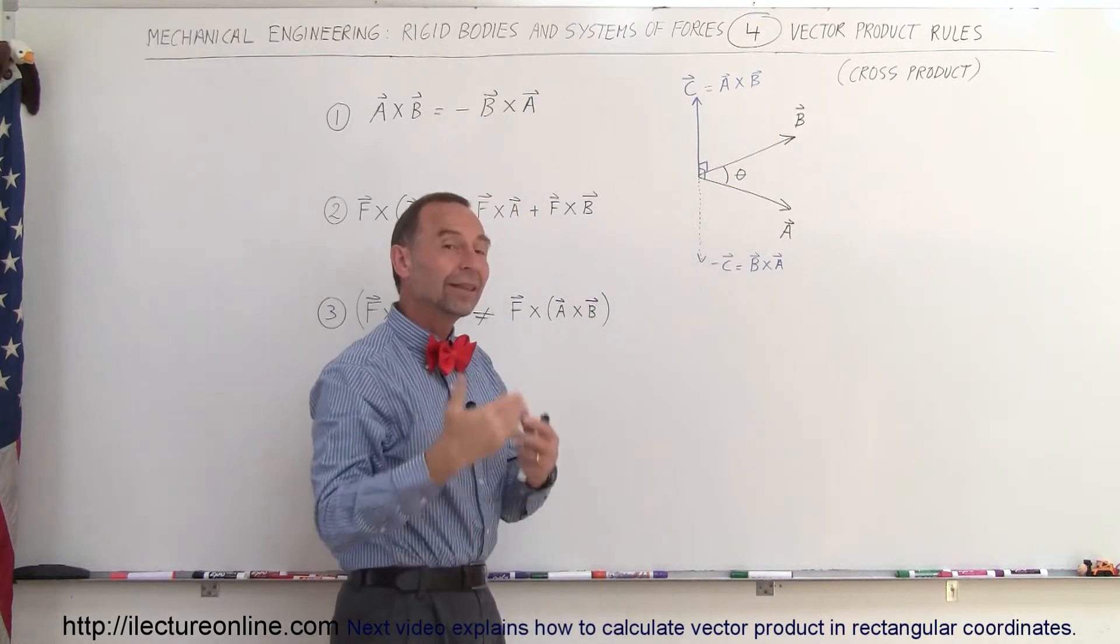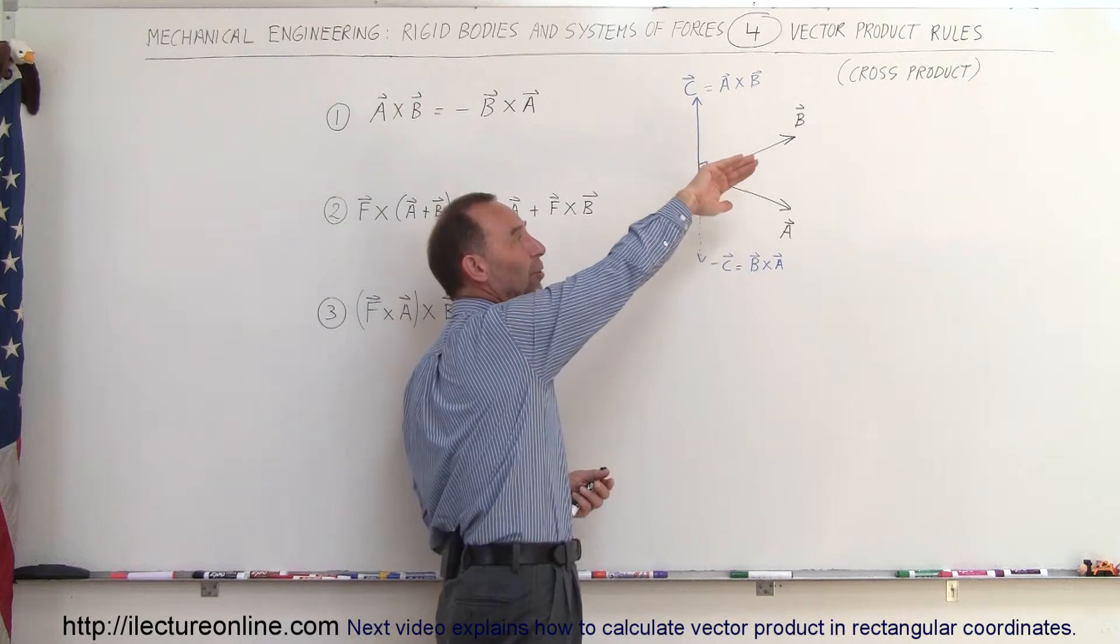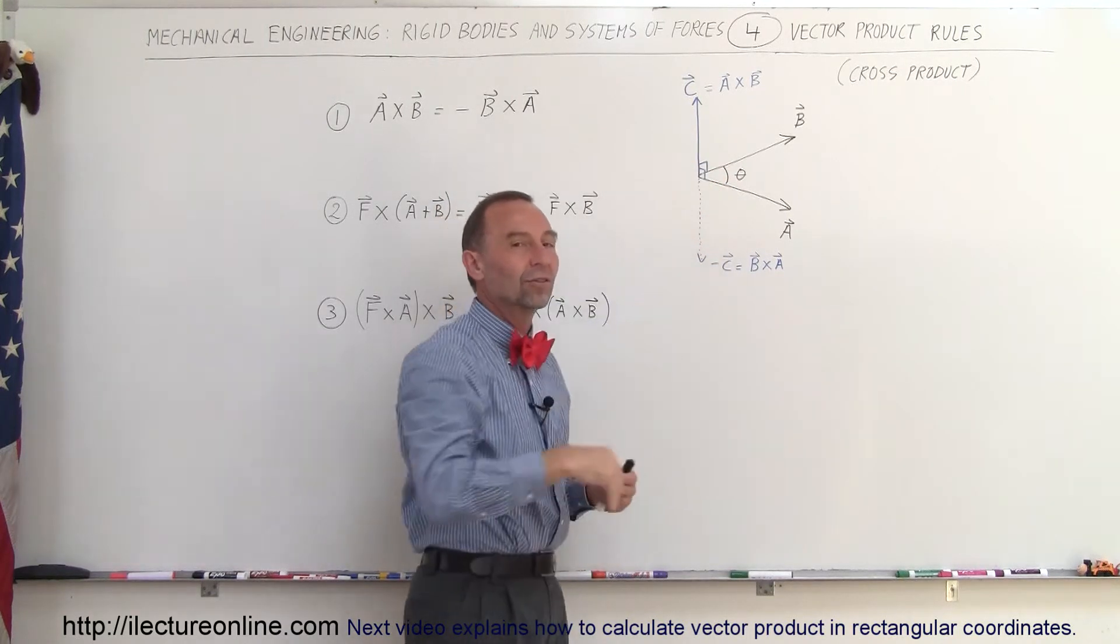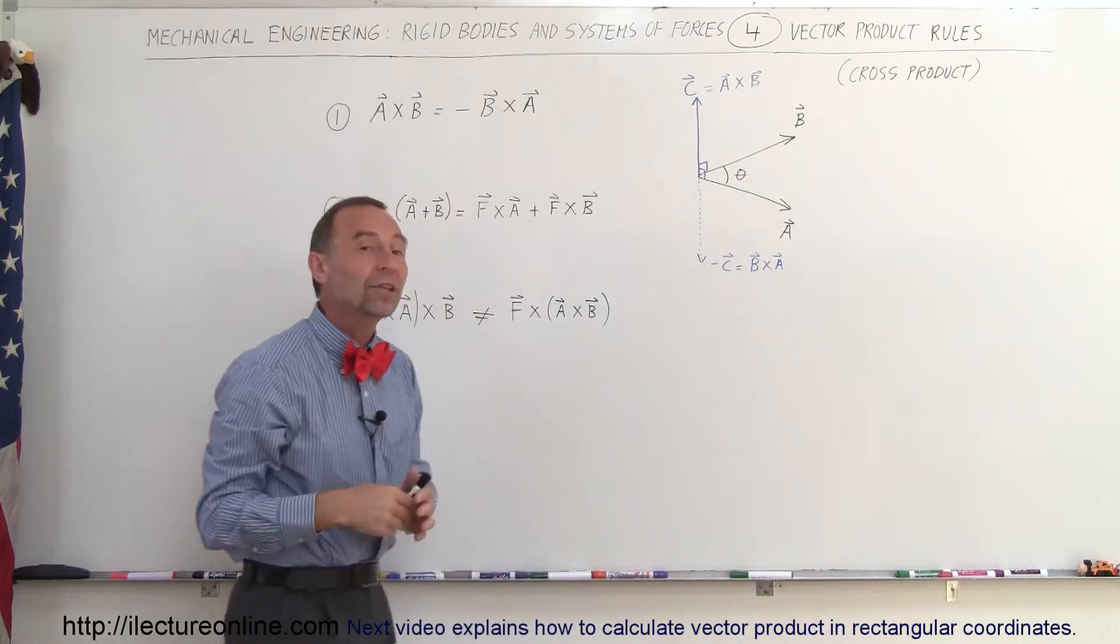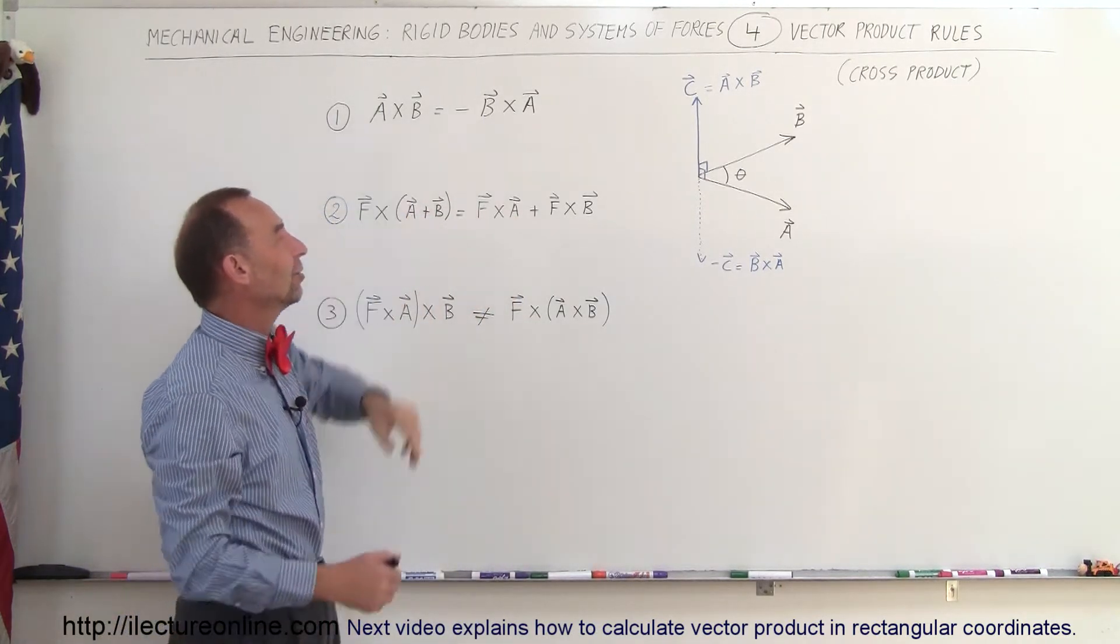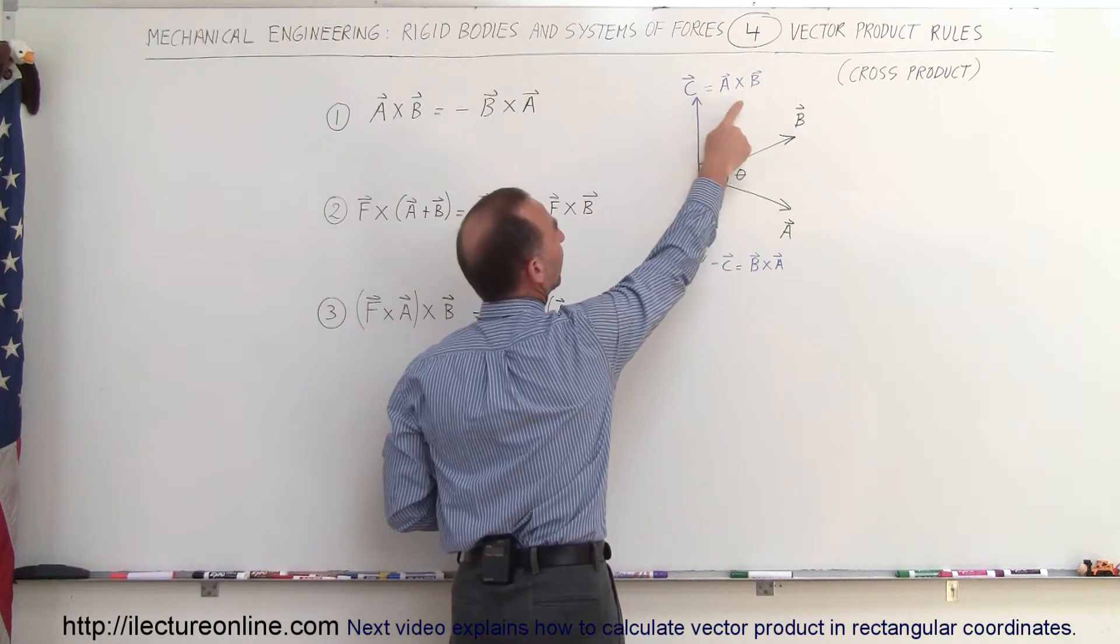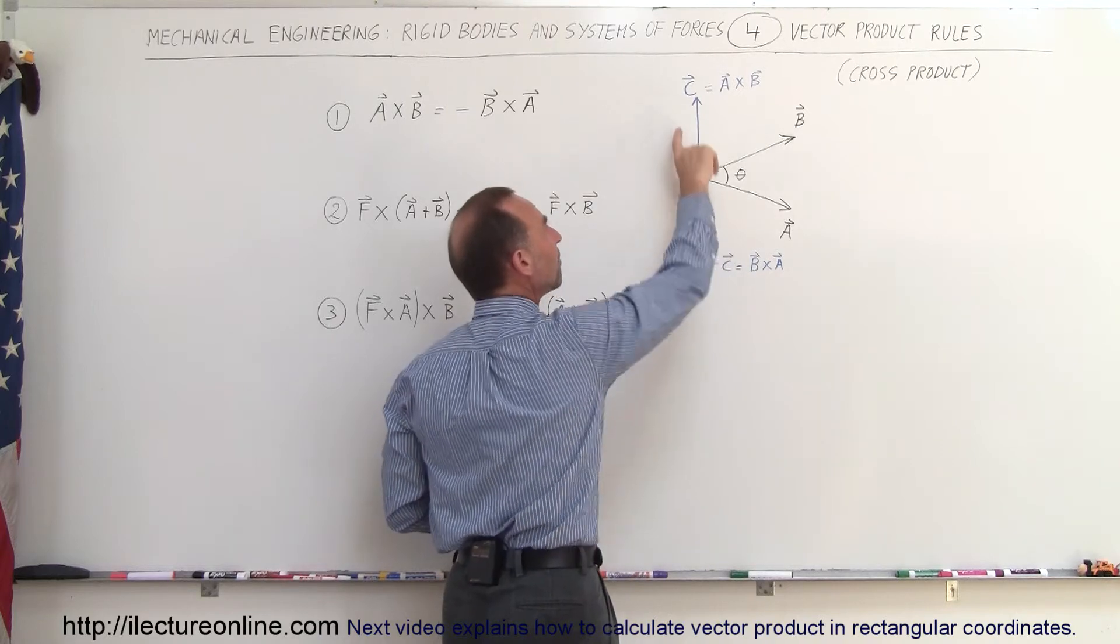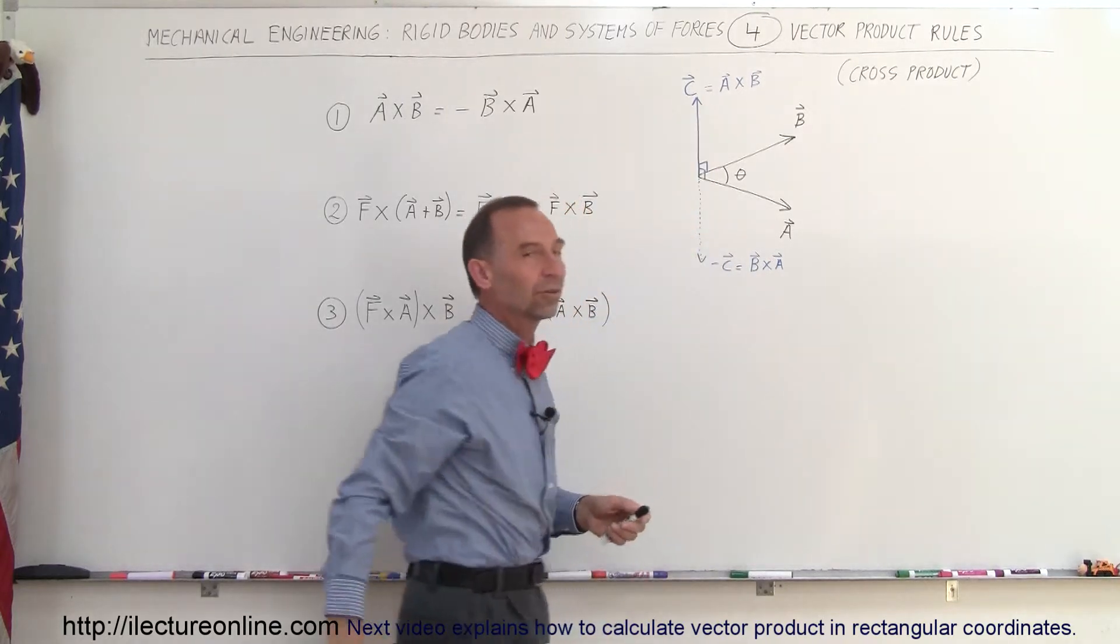And then if we do the thing in reverse, then you point your fingers in the direction of B, curl your fingers in the direction of the A vector, and then your thumb points in the opposite direction. So simply, one is the opposite of the other, and we can indicate that with the negative sign. So you can see that in this case, C is the result of A cross B, and minus C is the result of B cross A. They have the same magnitude, they're simply pointing in opposite directions.